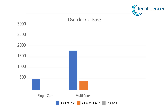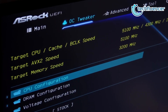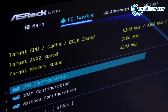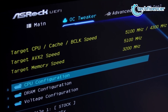While the 9600K can be overclocked up to 5.1GHz, I overclocked it to 4.8GHz using the ROG Maximus Code Motherboard, since the Asus H370 Pro Gaming does not support overclocking. On Cinebench R20, the overclocked 9600K scored 8% better on single-core and 9% better on multi-core performance. Since it can reach 5.1GHz, there is still room for improvement — a feature particularly helpful for video editors.